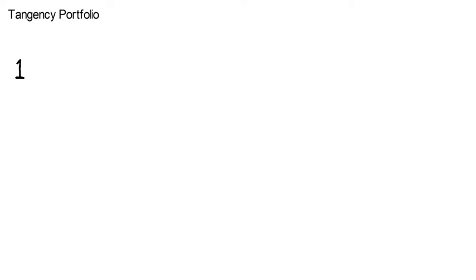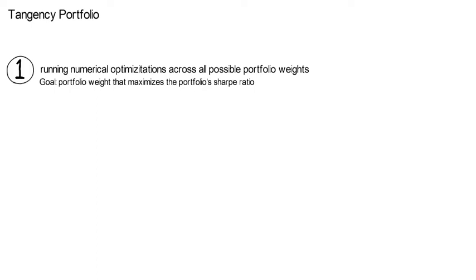Let's add some math intuition for step 1. I am going to present three ways for determining the tangency portfolio. The first approach is the most direct one. You have to run a numerical optimization across all possible portfolio weights Wp, and you are going to search for the portfolio weight that maximizes the portfolio's Sharpe ratio. The resulting optimal portfolio weight is then the tangency portfolio, which I denote as Wtp.